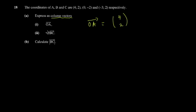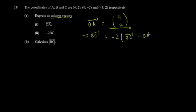The second part involves scalar multiplication. You have to find negative 2·BC. BC is equal to OC minus OB — commit this to memory: going from B to C means you take OC, the vector for the last letter, minus OB, the vector for the first letter.